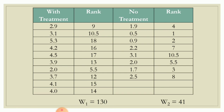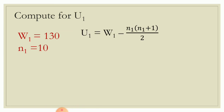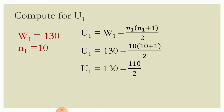We now have the necessary values and can compute U sub 1 and U sub 2. For U sub 1, the sum of ranks of group 1 is 130 and the number of observations in group 1 is 10. Substituting into the formula: U sub 1 equals 130 minus 10 times the quantity 10 plus 1, all over 2. Simplifying: 130 minus 110 over 2 equals 130 minus 55. Therefore U sub 1 is equal to 75.